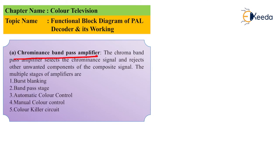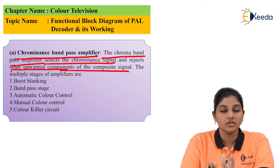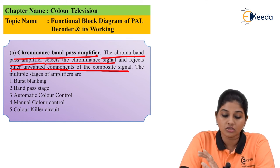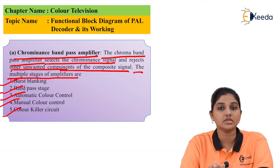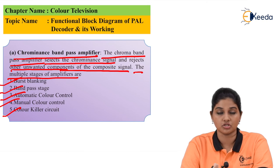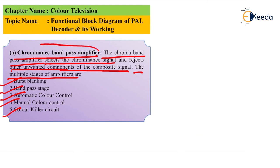The next stage is the chrominance bandpass amplifier. As its name indicates, it selects the chrominance signal and rejects all unwanted components of the composite signal. Like a bandpass filter, it allows only a particular band of frequencies and rejects all others — allowing only the chroma signal and rejecting all unwanted signals. The chrominance bandpass amplifier consists of various stages: burst blanking, bandpass stage, automatic color control, manual color control, and color killer circuit. The color killer circuit either allows or blocks color information — if it is on, only monochrome information is received; if off, color information is also received.